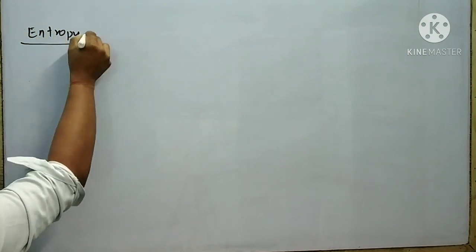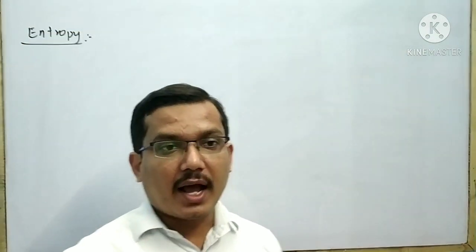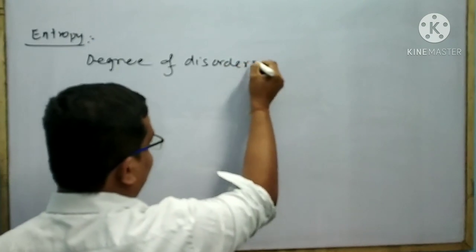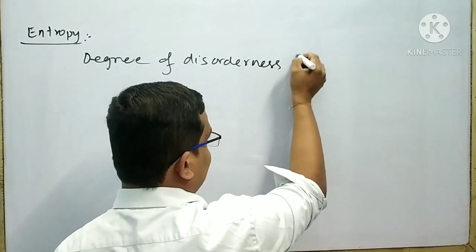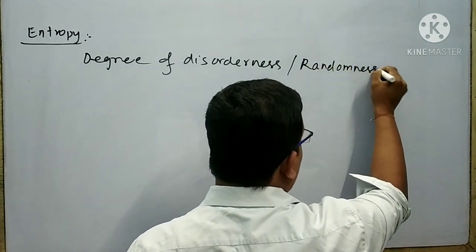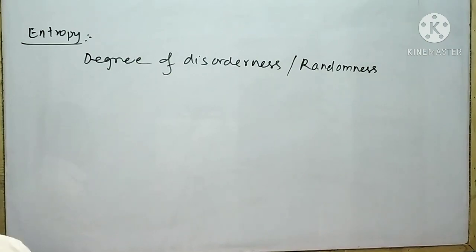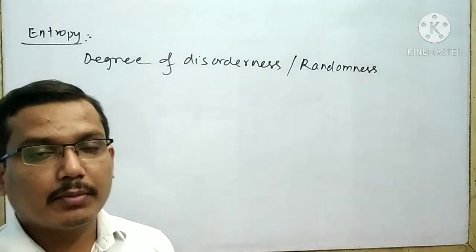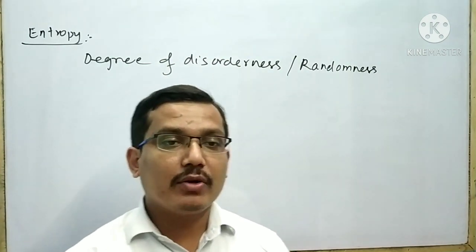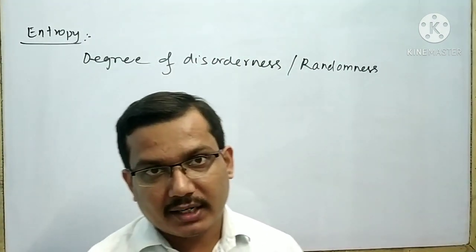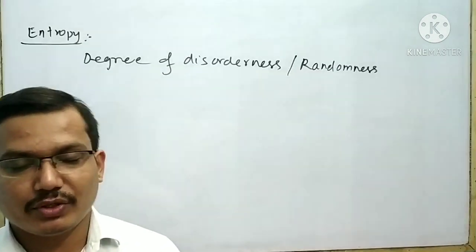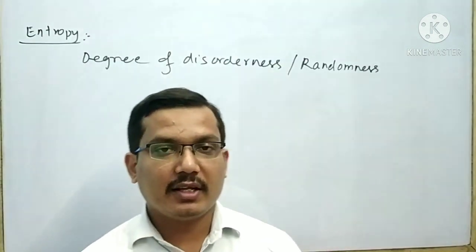Now I want to explain a new term: entropy. The degree of disorderness or randomness of a system is called entropy. If the molecules move randomly, the entropy of the system is more. If the molecules are present in a silent or ordered manner, the system has less entropy.